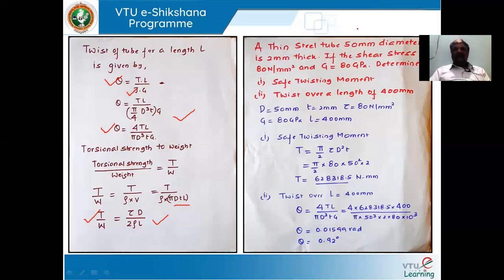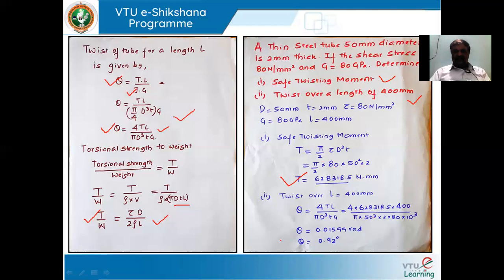Problem: A thin steel tube of 50 mm diameter and 2 mm thickness has shear stress 80 N/mm² and modulus of rigidity 80 GPa. Determine the safe twisting moment and the angle of twist over a length of 400 mm. Using T = (π/2)·τ·D²·t, substituting τ = 80, D = 50, t = 2, we get the safe twisting moment. Using θ = 4TL/(π·D³·t·G) with L = 400 mm, we get the angle of twist as 0.92 degrees.